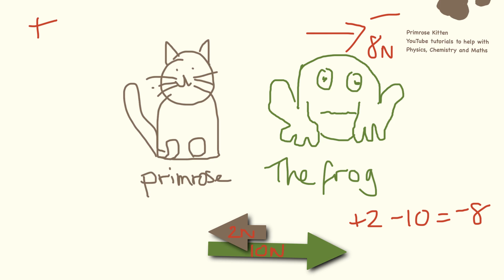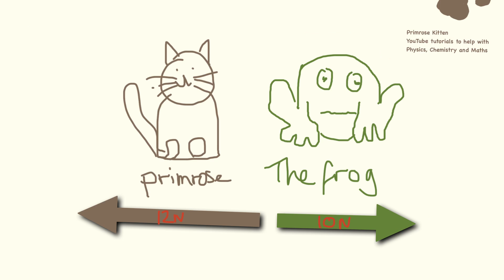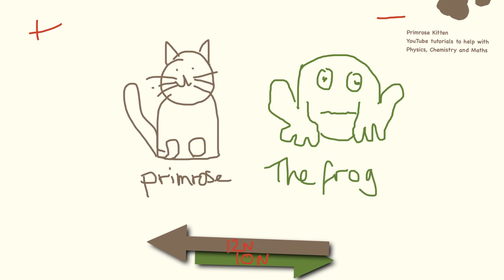Adding the two forces together like this is working out the resultant force. Again, positive over this side, negative over this side, and we have plus 12 newtons minus 10 newtons equals plus 2 overall. So it is going in this direction, but only with a force of 2 newtons, so it's not as much force as we had before.